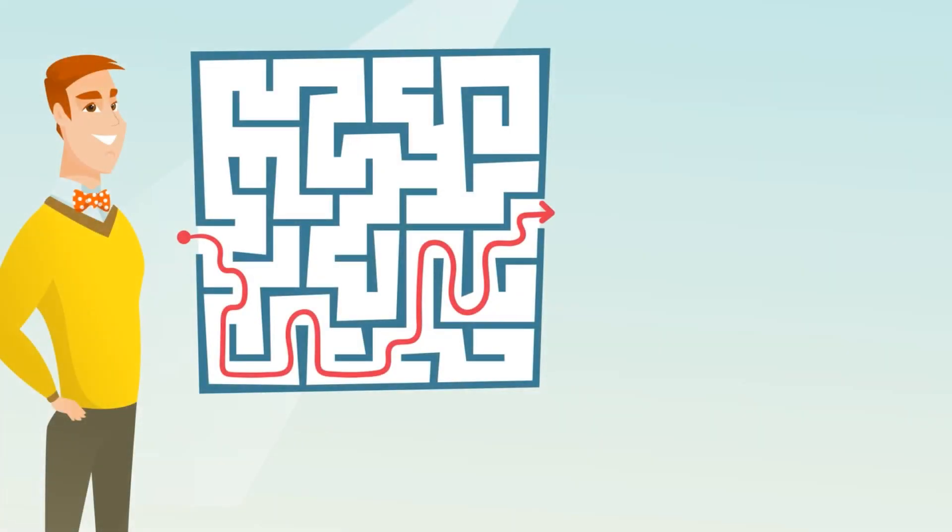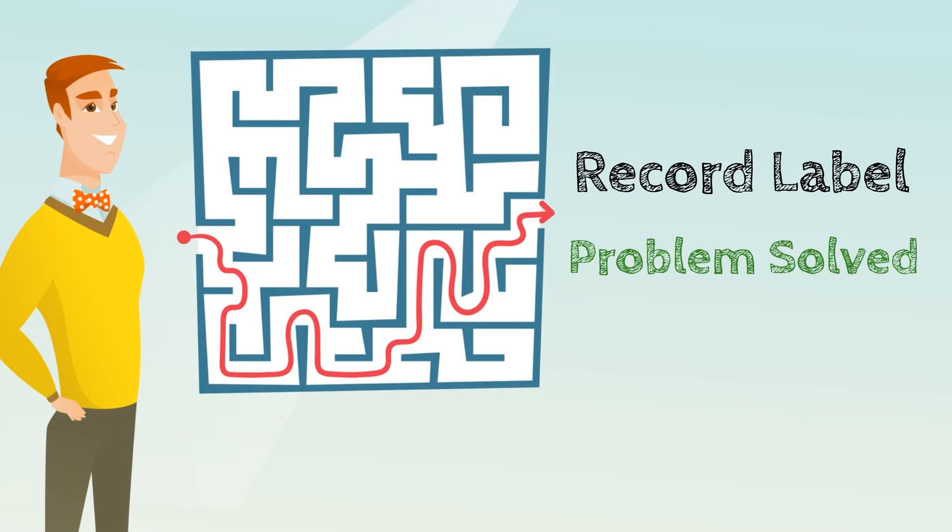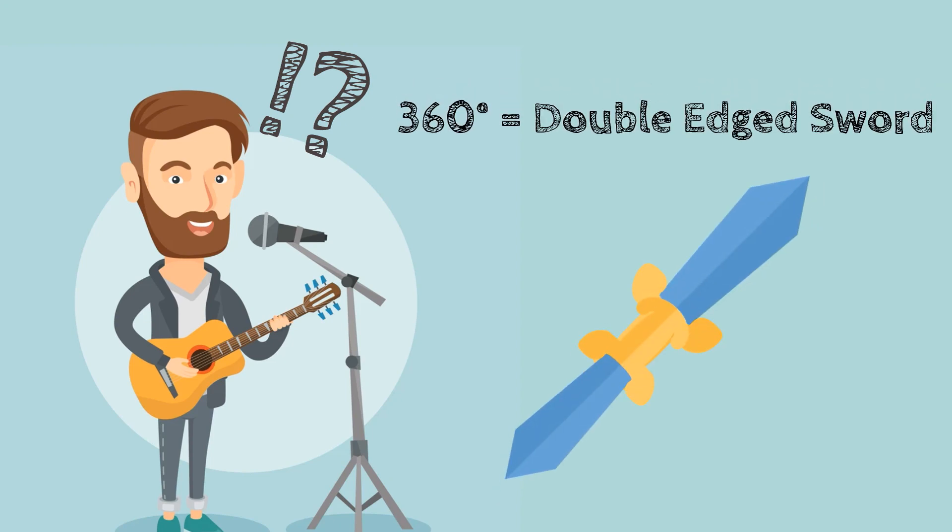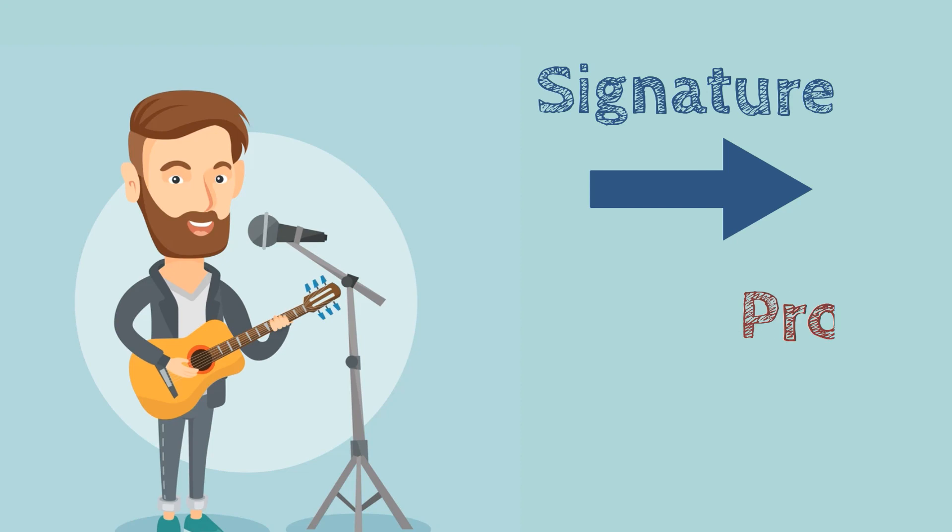The 360 deal potentially solves some of the revenue problems of the record label. But what about the artist? For a new artist, the 360 deal is like a double-edged sword. Almost any artist would love to be signed to a major record label. But if he must include the label in any additional income he makes, the artist may be putting more money in the label's pockets than in their own bank accounts. The artist needs to be aware that he is giving his signature in exchange for a promise from the record label.